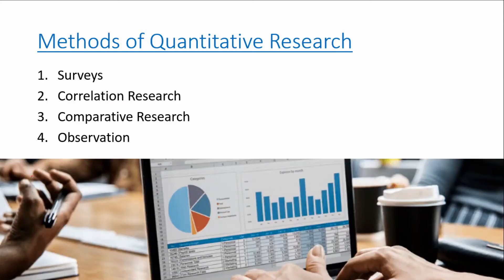The following are the methods of quantitative research. Correlation research is conducted to understand the relationship between two entities and what impact each one of them has on the other. For example, a research can be conducted to understand the relationship between the colors of a product and age or gender. Such research can help understand patterns, relationships, and trends.